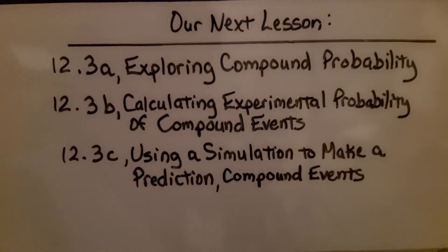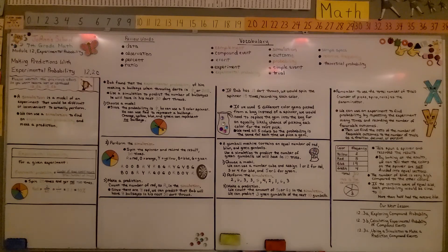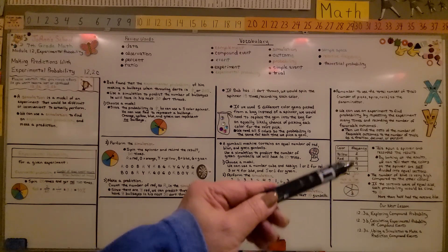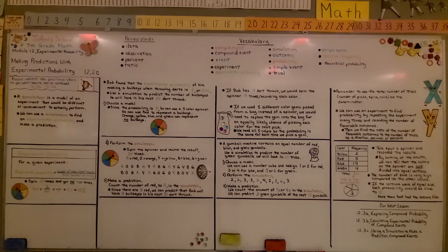We're finished with 12.2, and we're going to be moving on to 12.3. We're going to be exploring compound probability. And remember, the total number of frequencies, that's the number of trials, is the denominator for our ratio. Have a great day. I'm really proud of you. Join me for the next lesson. Bye.